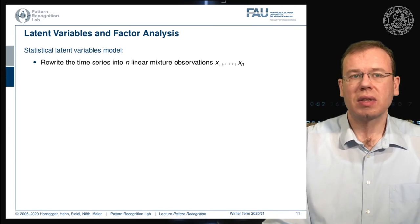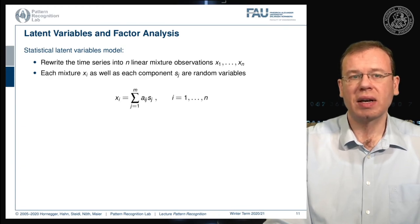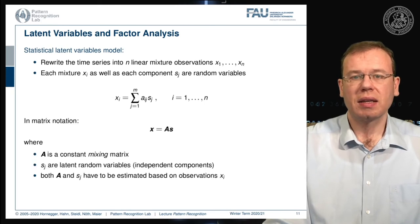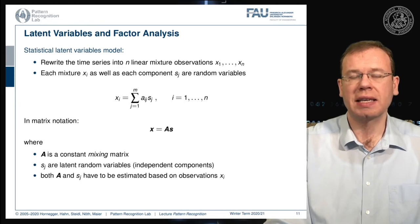So the idea is that we model this as statistical latent variables and we rewrite the time series into N linear mixture observations. And then each mixture XI as well as each component SJ are random variables. So we have essentially the XI is computed as a superposition of the signals in a linear way. Now we can also write this in matrix notation. Then this would simply be X equals to A times S.